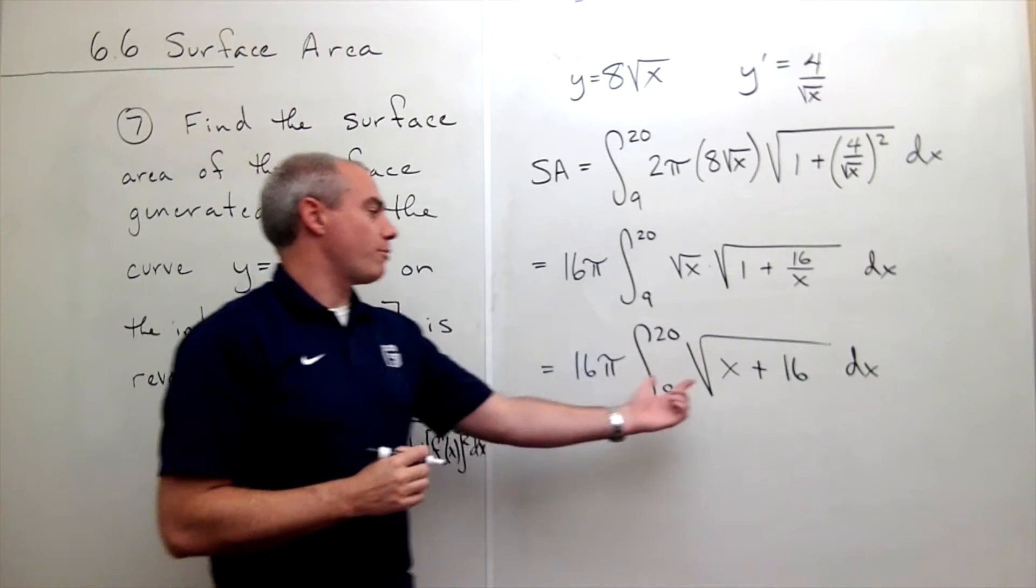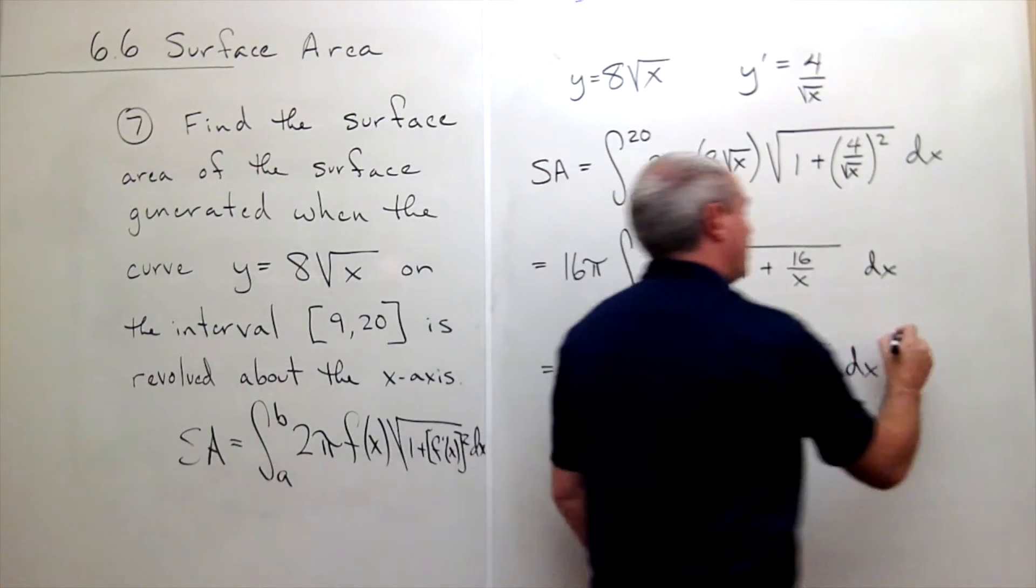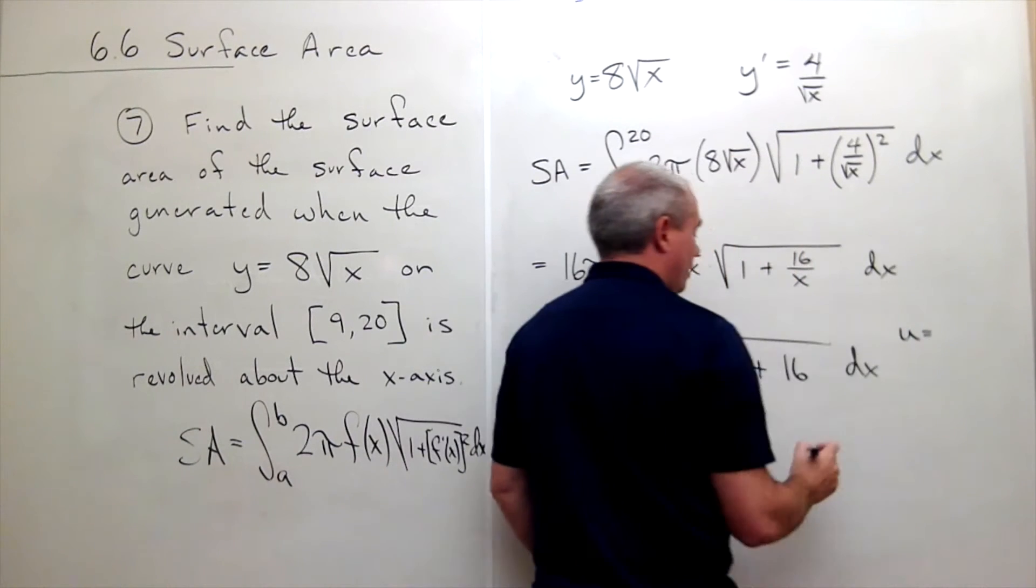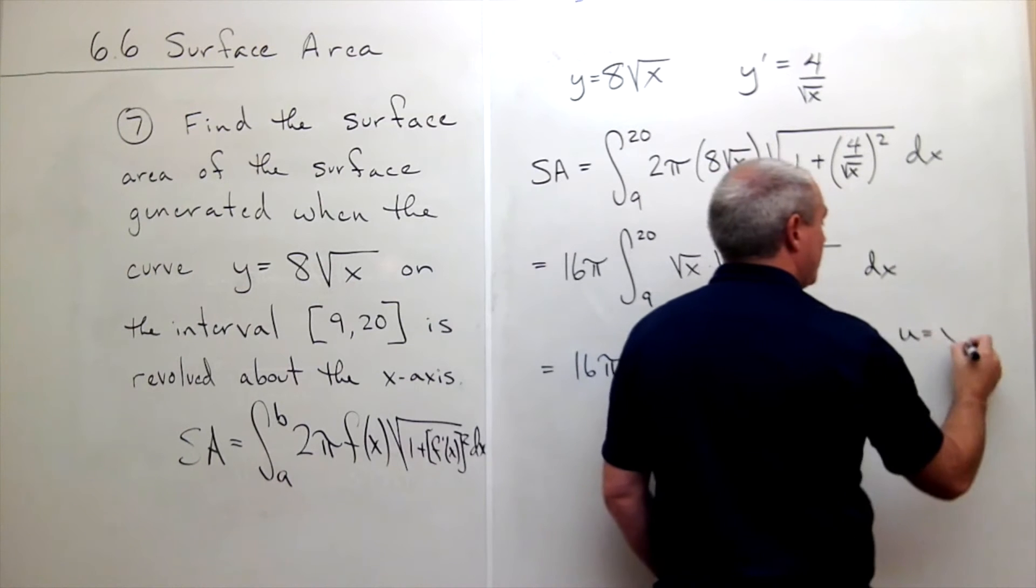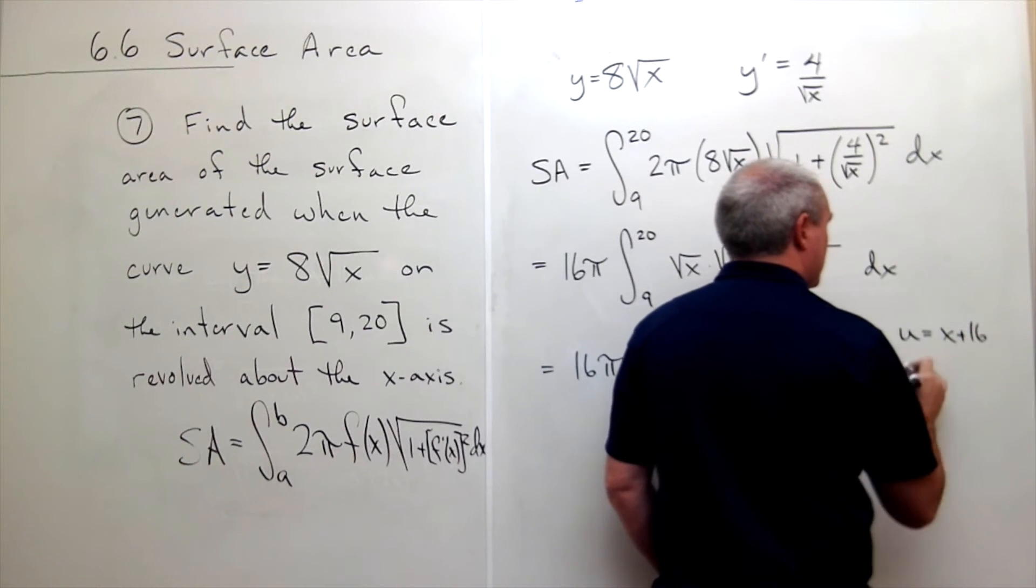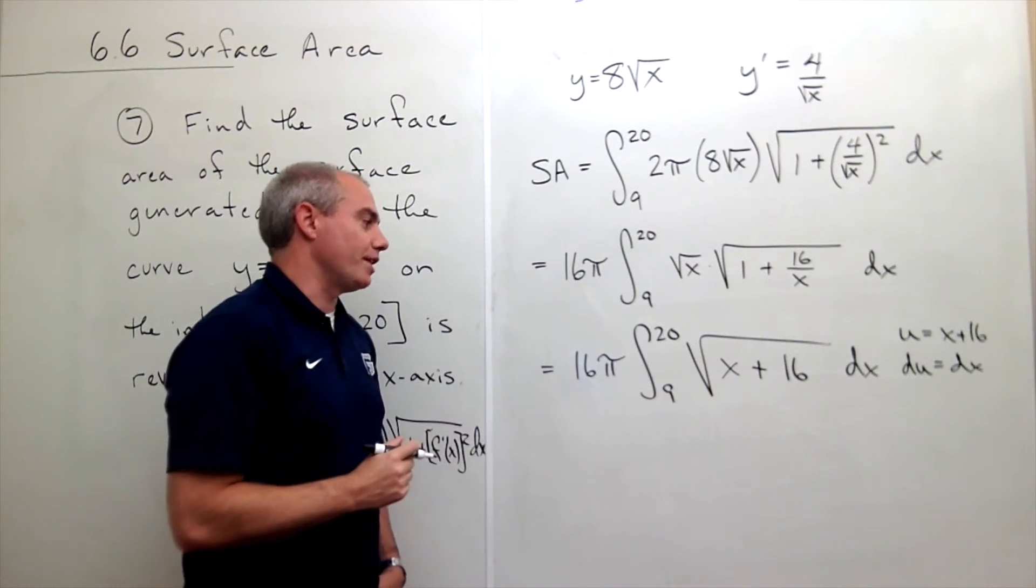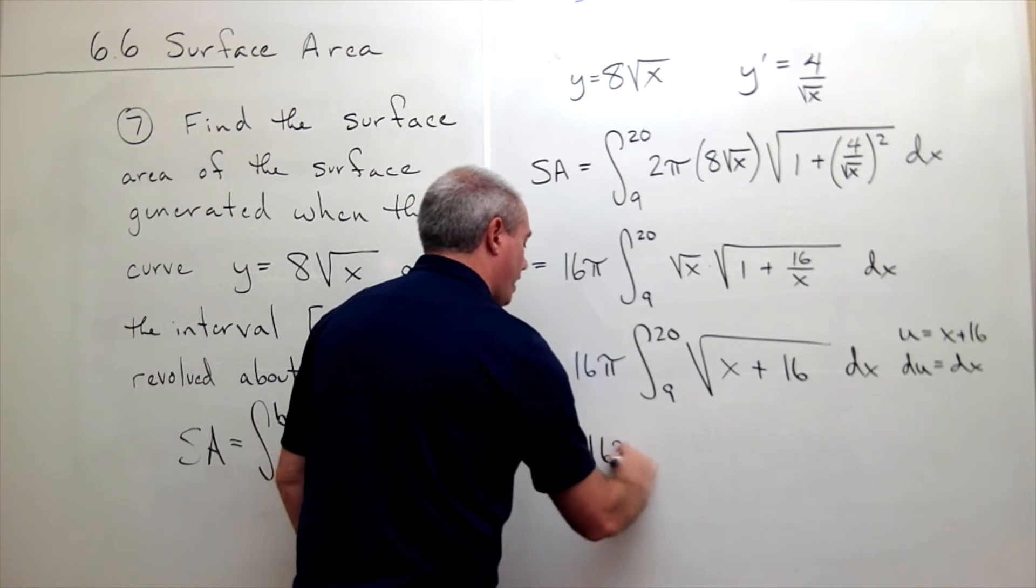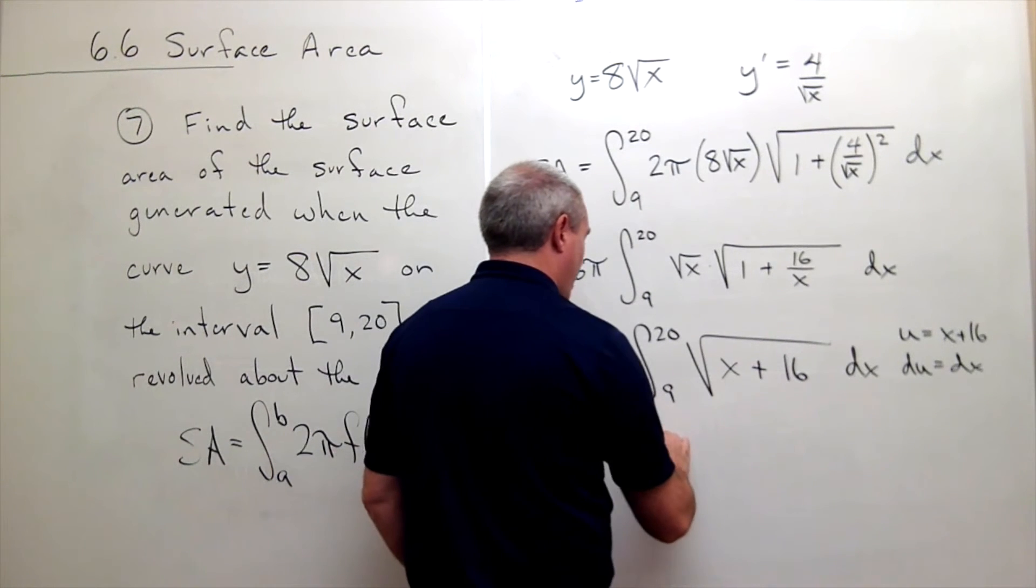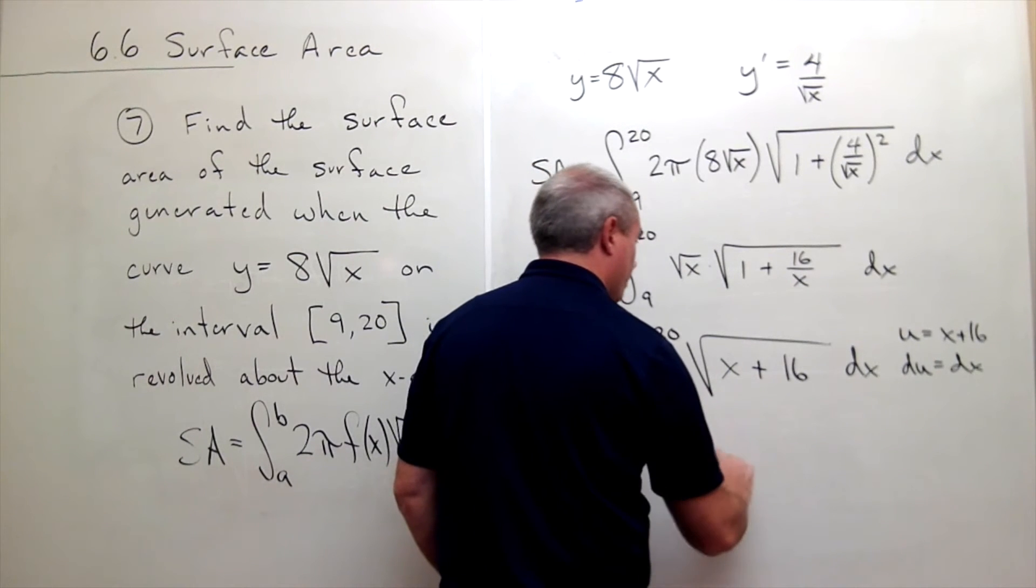And now this problem is just a u-substitution. So quickly I'll say let's let u be x plus 16, du is dx. So no fancy manipulation here. I can just make my substitution. I still have a 16π on the outside.